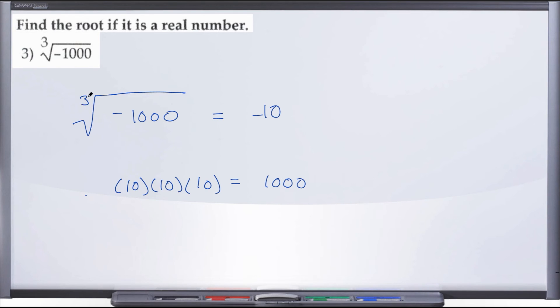They're asking what number cubed gives us negative 1,000. Negative 10 times negative 10 times negative 10: negative 10 times negative 10 is positive 100, times negative 10 is negative 1,000, which is what we're looking for.